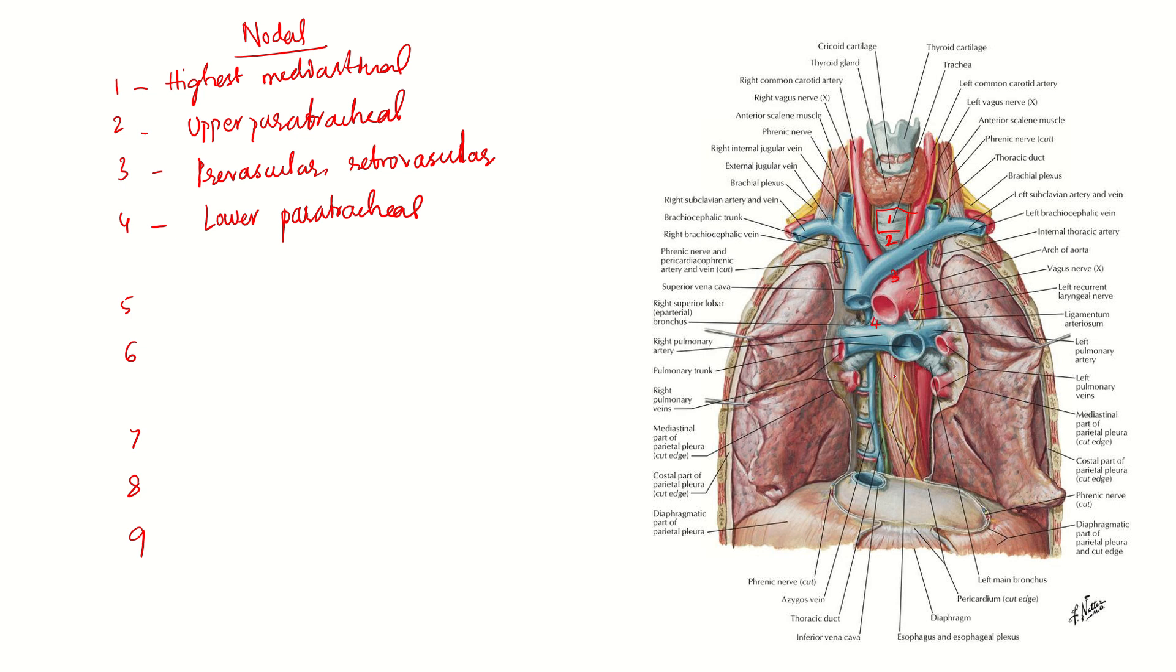Coming to station 5 and station 6. Station 5 is subaortic, between aorta and pulmonary artery. This is station 5. Station 6 is para-aortic, along the ascending aorta. These stations are labeled from above downwards. Coming to stage 7, it is subcarinal. Here we can't see the trachea because of the vessel, so I am just drawing this here. Just below the carina is station 7. Then comes paraesophageal, just on the sides of esophagus. And 9 is adjacent to the diaphragm, close to the pulmonary ligament.